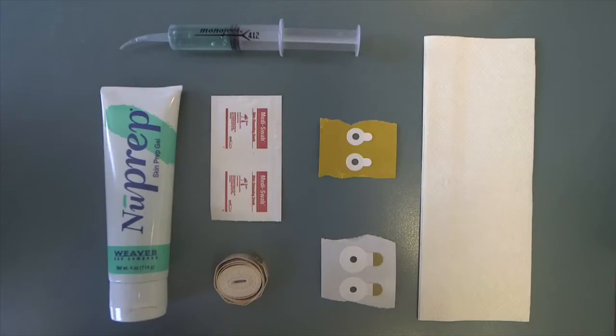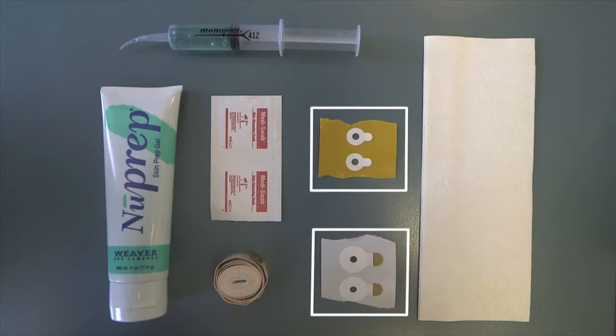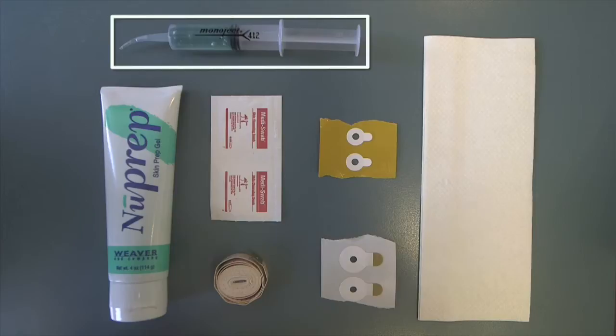In addition to the cap and the electrodes, you'll need a few extra things to set up the EEG system. For your setup, you will need the following: measuring tape, NuPrep exfoliating gel, paper towels, alcohol wipes, four adhesive rings, and a syringe filled with conductive gel.